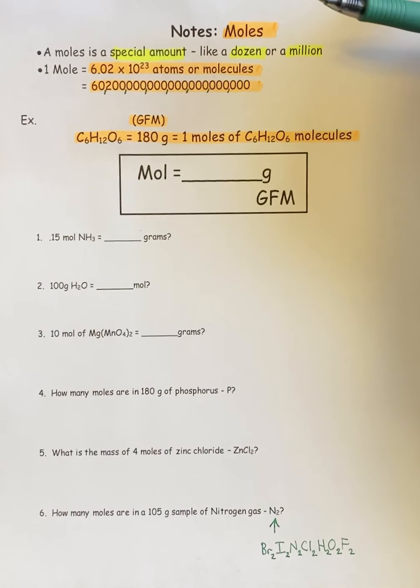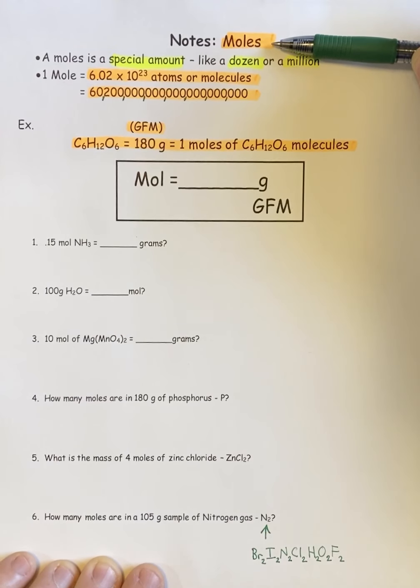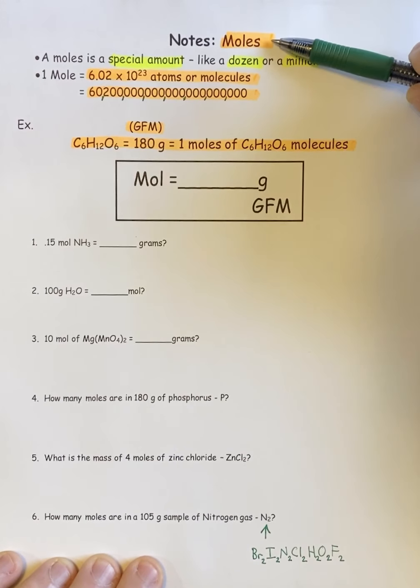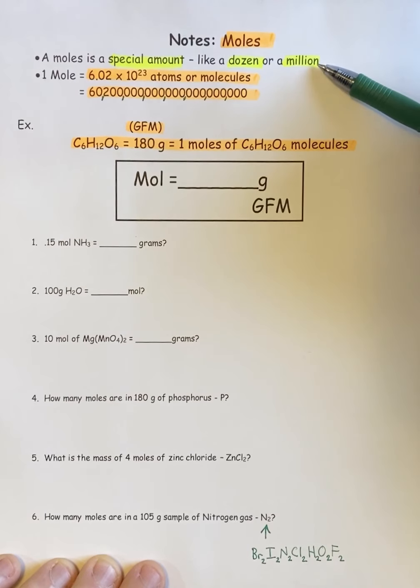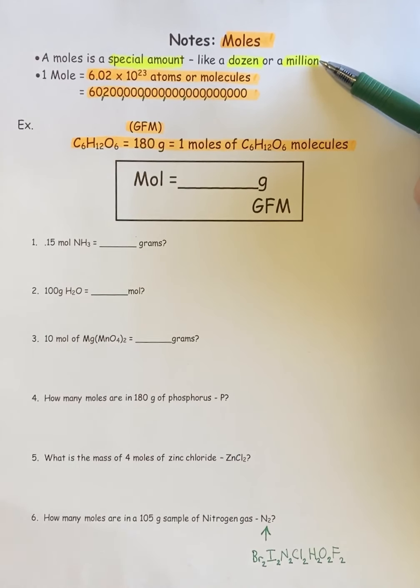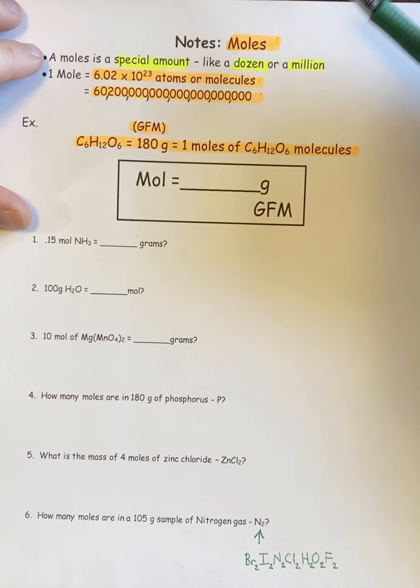This topic is called moles. In chemistry, we're not talking about the animal. We're talking about a special amount, or a word that represents a number. Just like in our everyday common language, a dozen means 12, a million tells you how many there are. A dozen is a better example, but you get the idea.